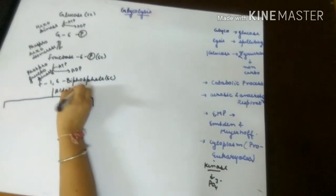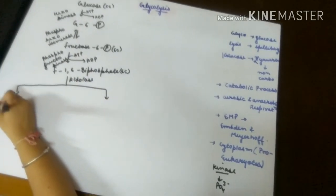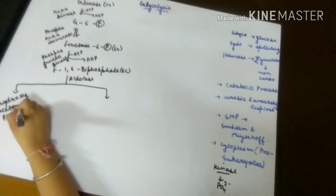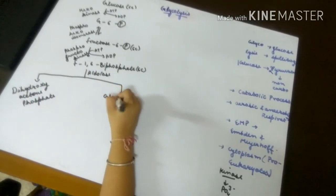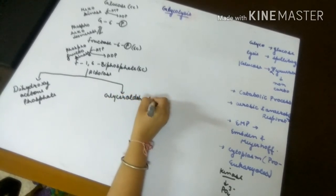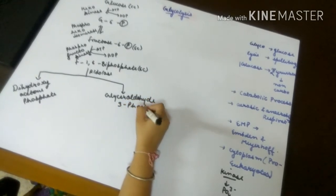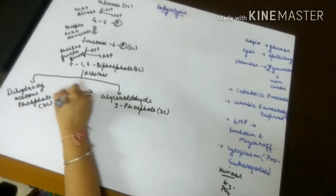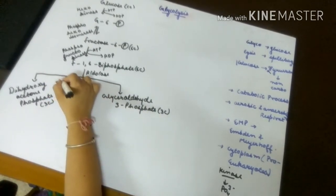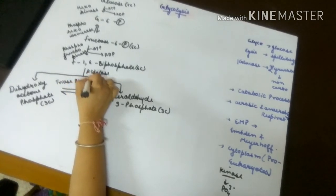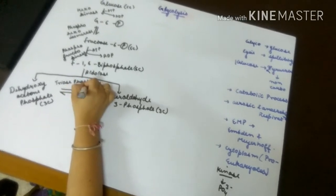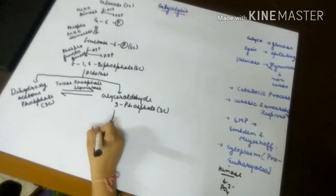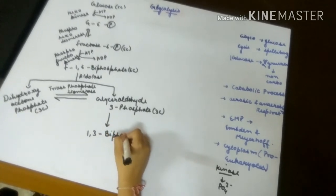Now the six-carbon sugar fructose-1,6-bisphosphate, with the help of enzyme aldolase, is cleaved into dihydroxyacetone phosphate and glyceraldehyde-3-phosphate. These are both three-carbon sugars which are isomers of each other. They get converted into each other by the enzyme triose phosphate isomerase.